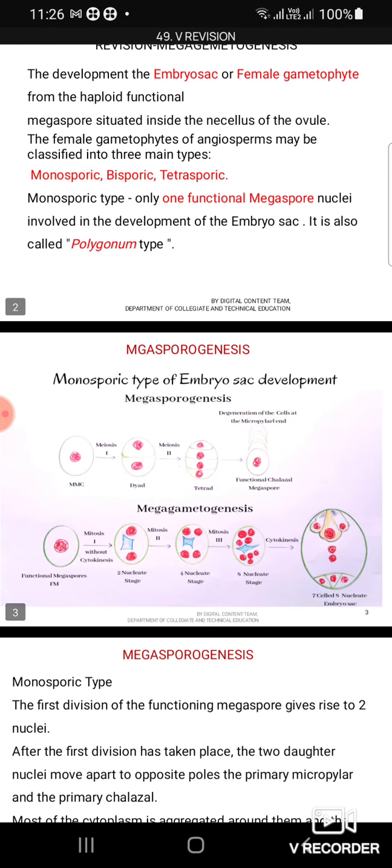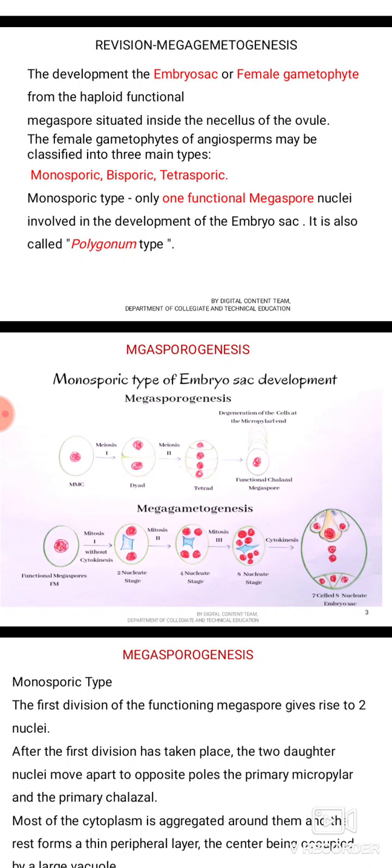In the monosporic type, the megaspore mother cell undergoes the first meiotic division to give rise to two nuclei. Later it undergoes a second meiotic division resulting in formation of a tetrad. Among these four cells, the chalazal megaspore — the lowermost one — is functional; the remaining three degenerate.